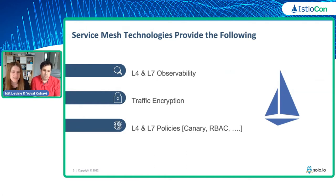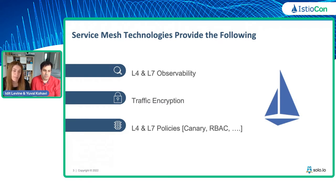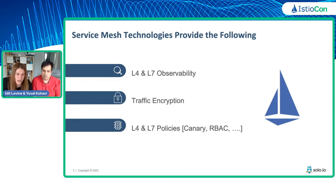Specifically, let's talk about why we use Istio — what features we need to cover. There are three things: number one, we need to bring observability at layer four and layer seven. Number two, we need to make sure that the traffic is encrypted, because security is really important. And third, we need to be able to apply policy on the mesh and on the pipe — layer seven as well as layer four — things like Canary, RBAC, retries, and so on.